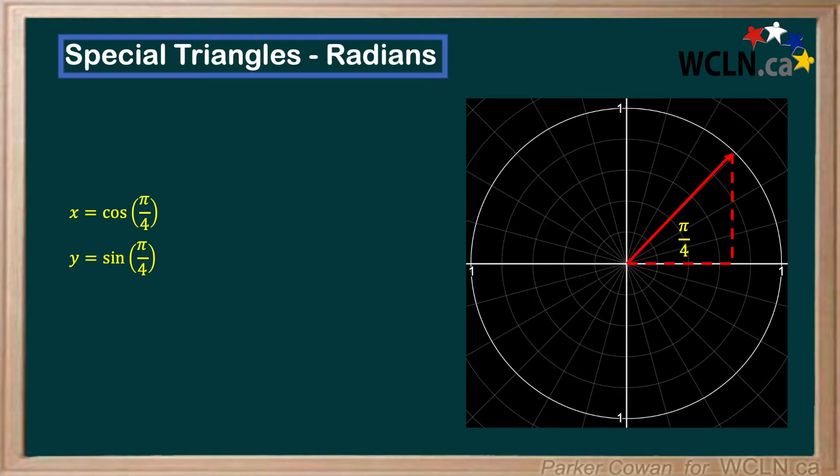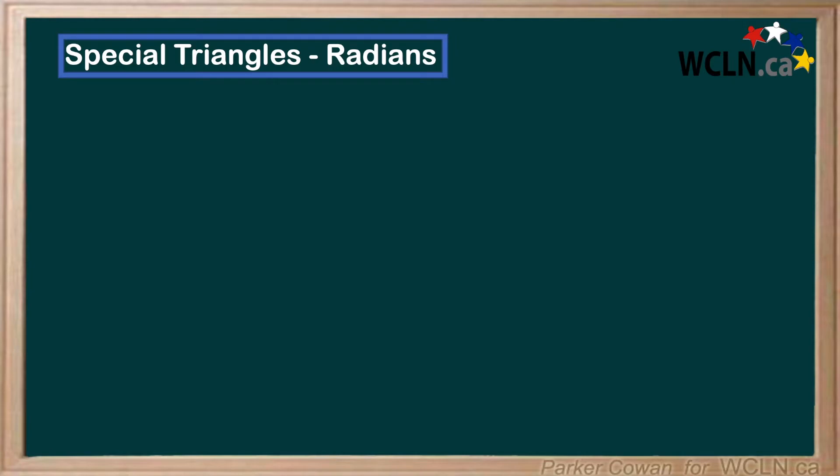So we actually already solved for these points earlier in the video. So let's just pull those answers up. Thus, for x, we get 1 over root 2, and for y, we also get 1 over root 2. Finally, we can plot this point on the graph, giving us 1 over root 2, 1 over root 2.